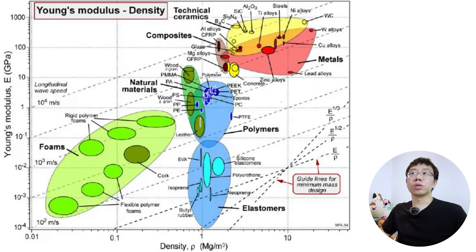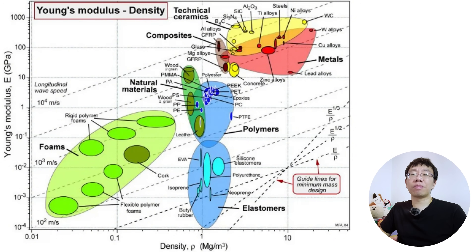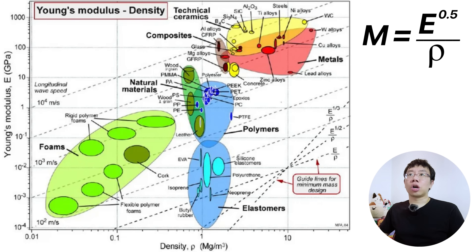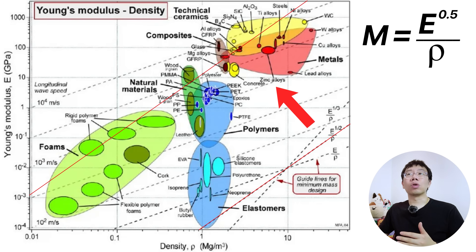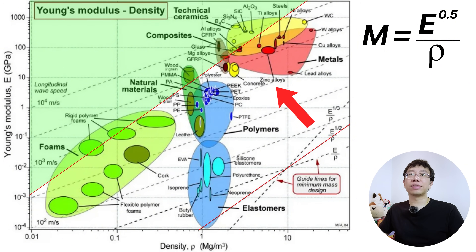Step three is ranking. This is where we leverage an optimization tool called an Ashby chart. Because these charts use log-log scales, complex parallel relationships between properties appear as straight lines. We plot the two competing properties — for example, Young's modulus versus density. To find the best material, we apply the material index derived from our design equations. For a light stiff beam, that index is Young's modulus to the power of one-half over the density. On the chart, this index manifests as a selection line with a specific slope — in this case, a slope of two. By shifting this guideline toward the top-left corner, which is the region of high stiffness and low density, we can instantly isolate the optimal material candidates. Any material sitting above your target line exceeds your performance requirements, allowing you to prioritize secondary factors like cost or lead time without compromising on the primary mechanical constraint.